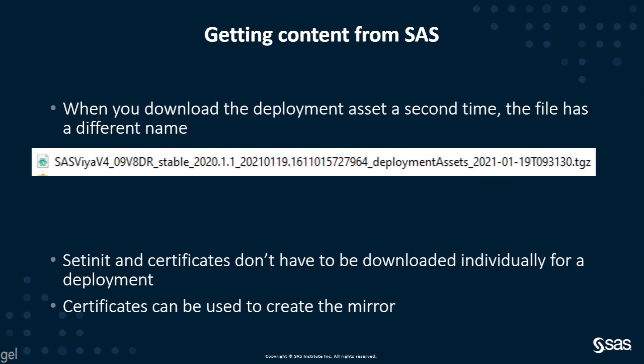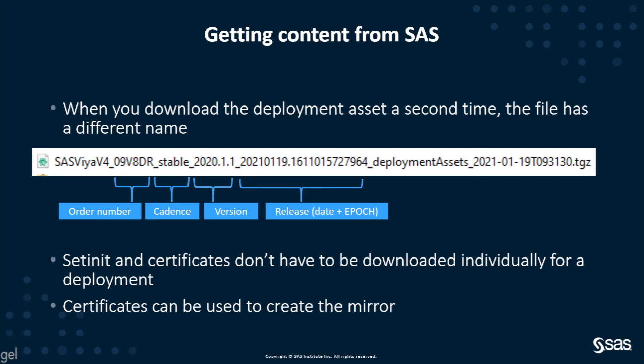Looking at the detail of the deployment assets file name, you can see it already provides a lot of useful information: the order number, the cadence (stable or LTS), the version, the exact release level or patch level, and at the end of the file name, a timestamp of the download, so you know exactly when the file was downloaded.